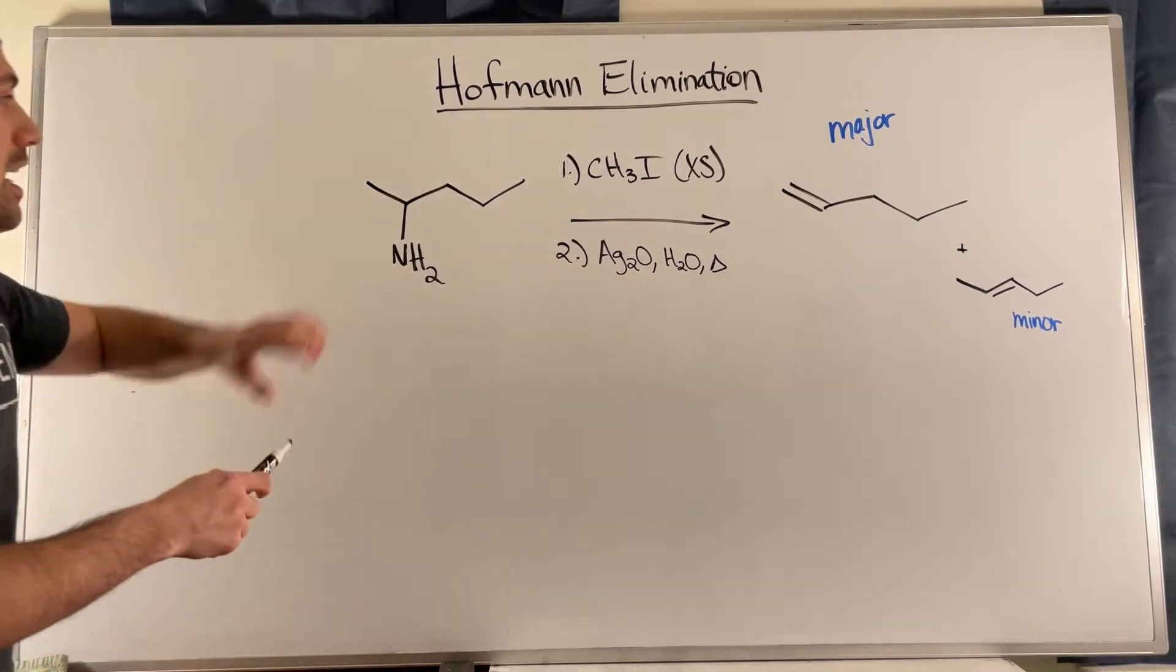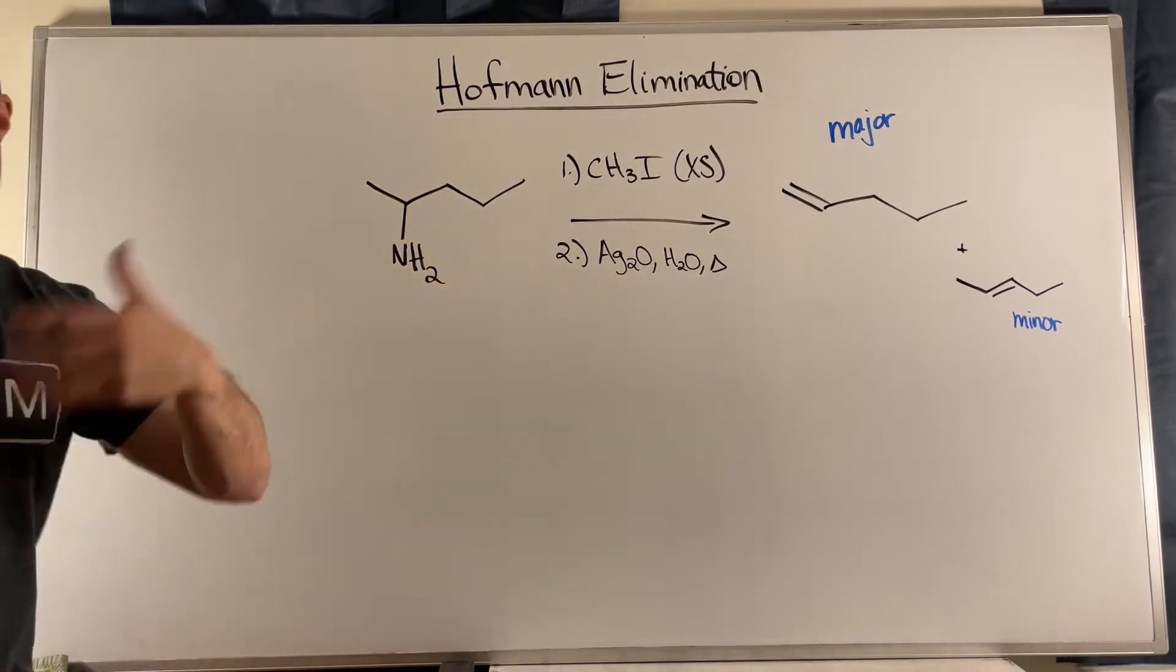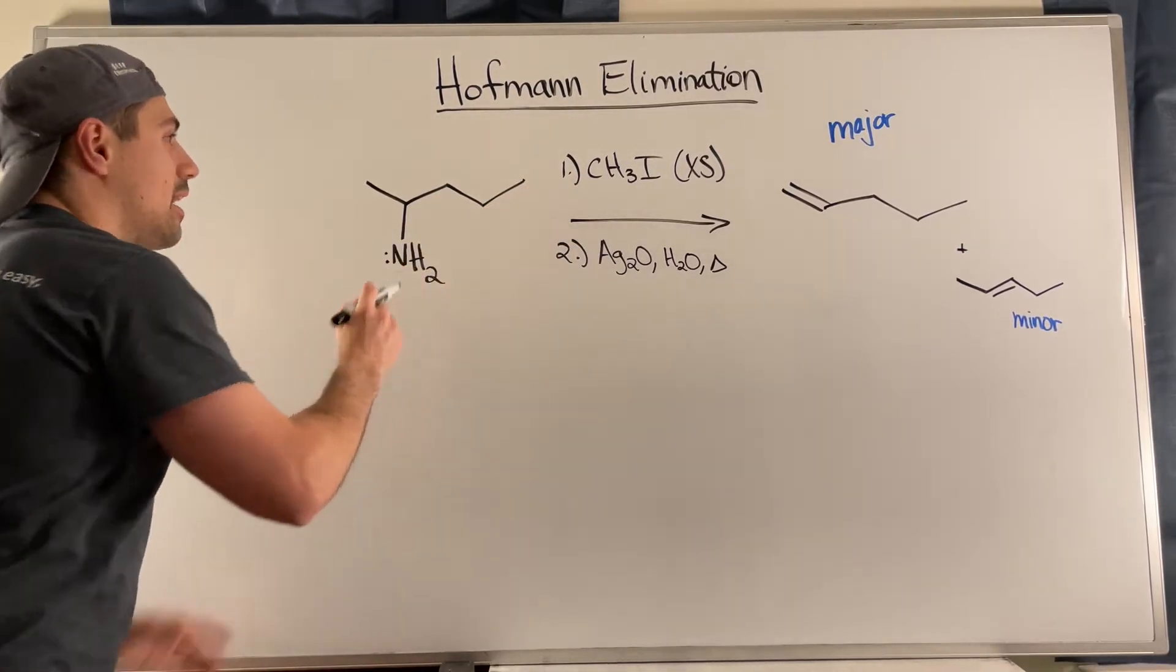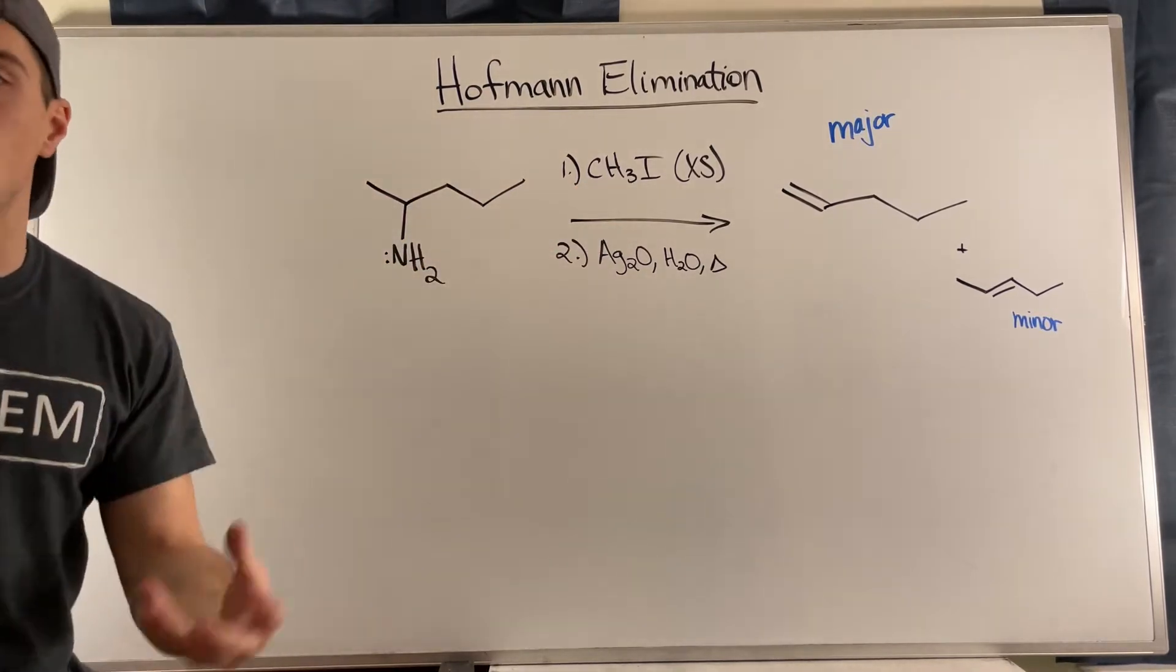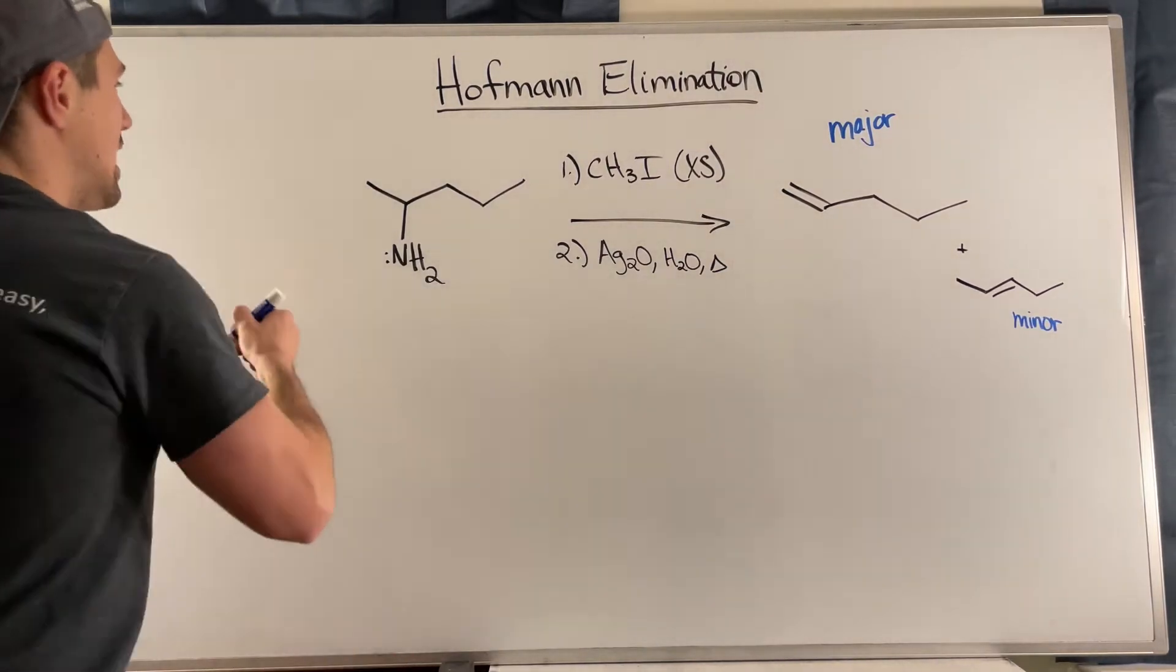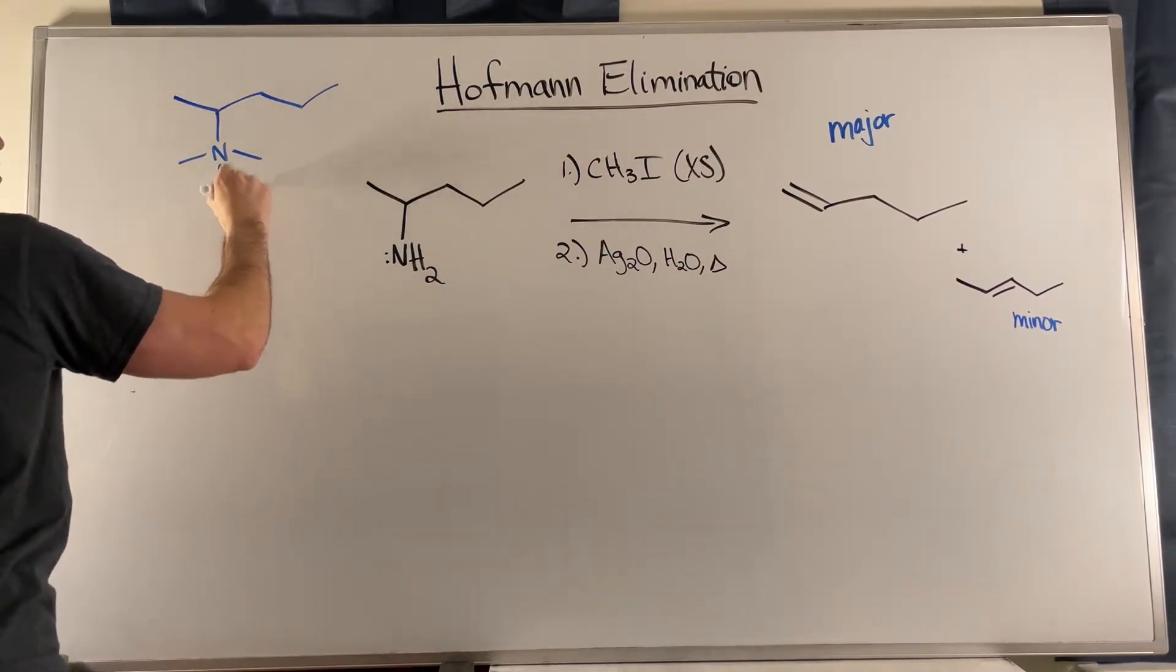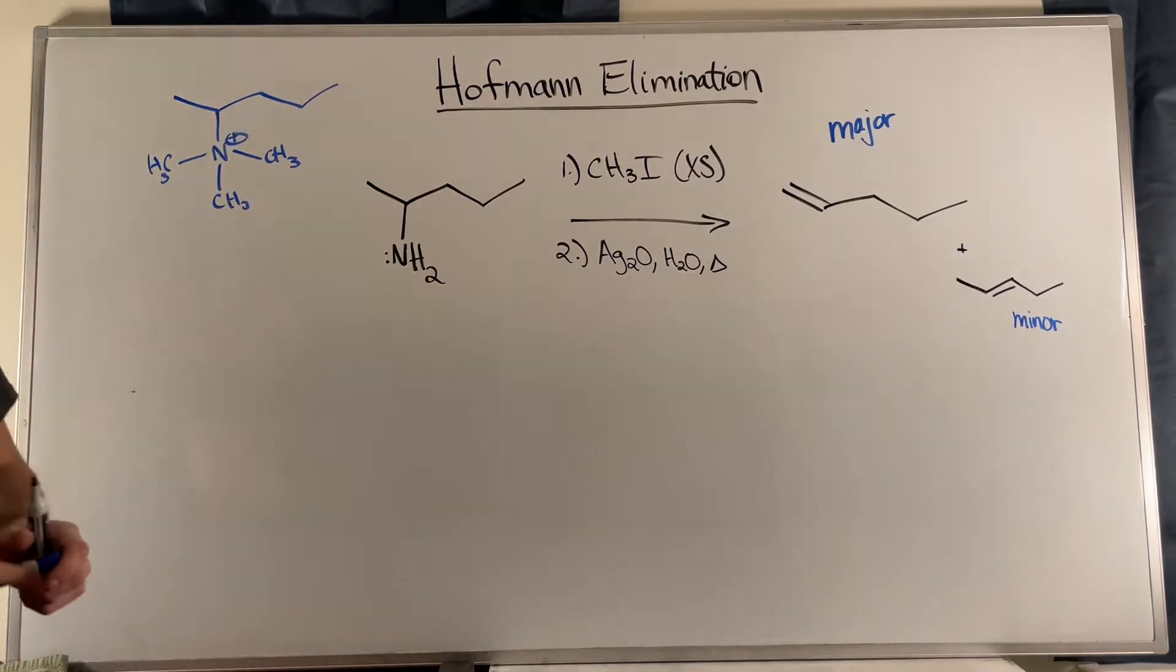So if you have a reaction like this, what you'll see is you'll start with an amine or maybe someone gives you an ammonium salt. Either way, that's what you generate in this first step. If you're given an amine, we see we have an amine and then here for example we see we have methyl iodide. So in this first step we're going to just do exhaustive alkylation of the amine or just over alkylation.